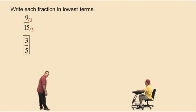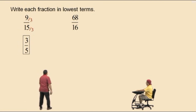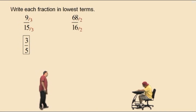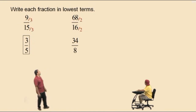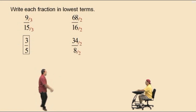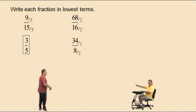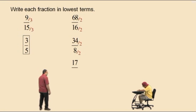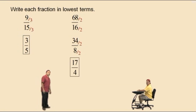Let's do another one. We have 68 over 16. They're both even numbers, which means they can both be divided by 2. 68 divided by 2 is 34. 16 divided by 2 is 8. Now, once again, we still have even numbers, so we can divide by 2 again. 34 divided by 2 is 17. 8 divided by 2 is 4. Very nice. Don't forget to circle or box your answer.